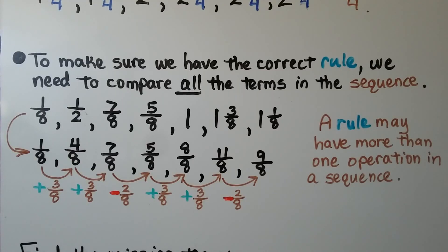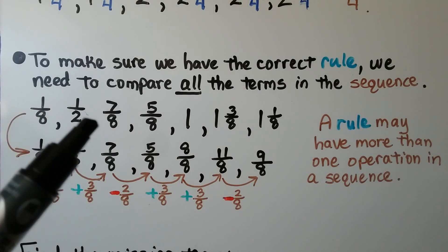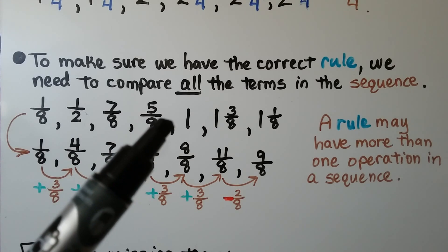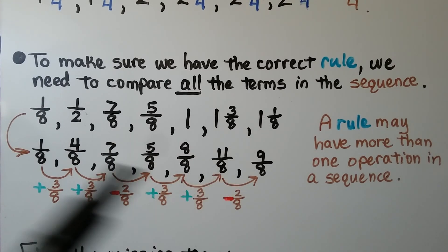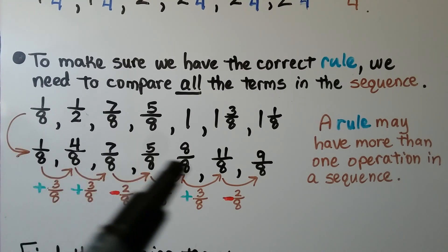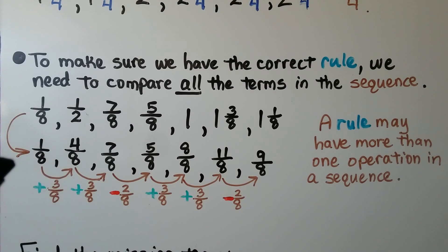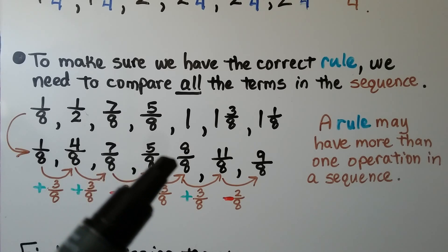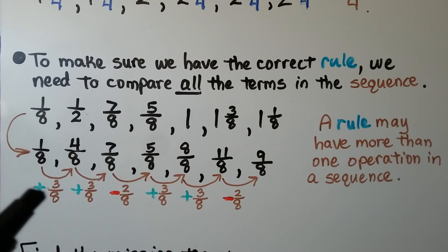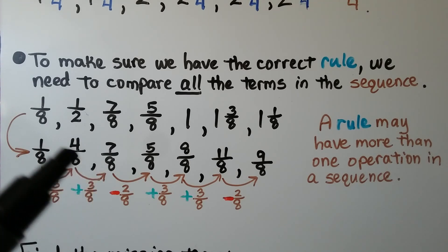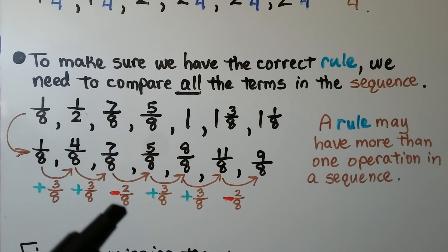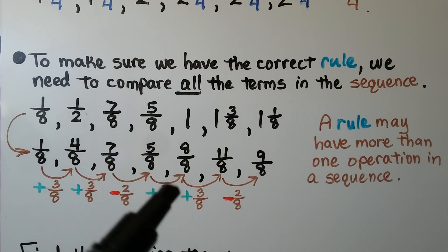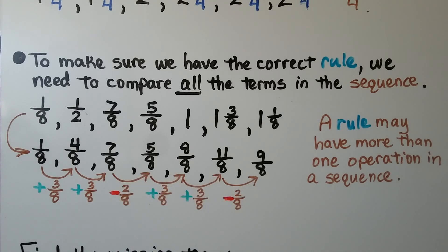To make sure we have the correct rule, we need to compare all the terms in the sequence. We have one eighth, one half, seven eighths, five eighths, one, one and three eighths, then one and one eighth. With eighths as denominators: one eighth, four eighths, seven eighths — then down to five eighths, back up to eight eighths. We're adding three eighths, then adding three eighths, then subtracting two eighths — then adding three eighths, adding three eighths, and subtracting two eighths. So a rule may have more than one operation in a sequence.